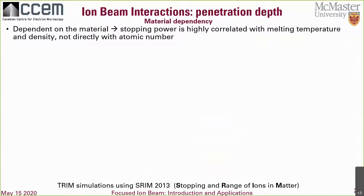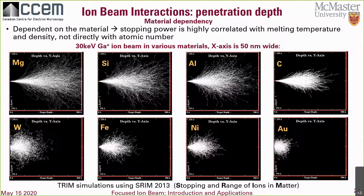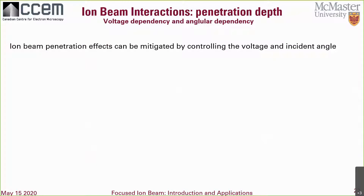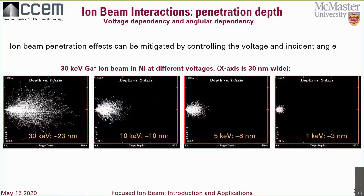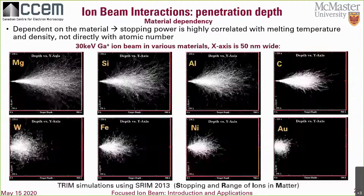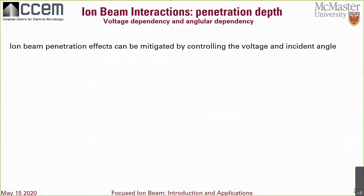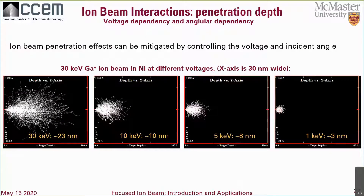The ion beam penetration depth is highly dependent on the material, with the stopping power highly correlated with melting temperature and density rather than directly with atomic number. Here are some examples of ion trajectory Monte Carlo simulations showing 30 kV gallium ions entering various materials, with a range of about 15 to 50 nanometers of penetration depth. As FIB operators, we can't control the material, but we can control the incident angle.